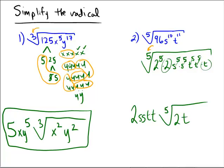So the final answer you'd probably submit with simplification would be 2S squared T squared, 5th radical of 2T.